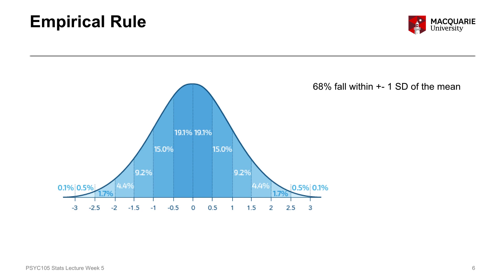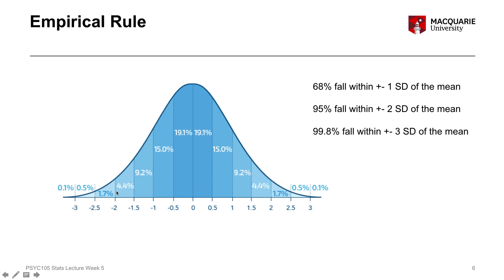To summarize: 68% of scores fall within plus and minus one standard deviation of the mean. 95% of scores fall within plus and minus two standard deviations of the mean. And 99.8% of scores fall within plus and minus three standard deviations of the mean. So any person with a score greater than three standard deviations above or below the mean is very, very unlikely. That particular shape of the curve is called a probability density function — the density representing how many scores we have in certain parts of the graph.